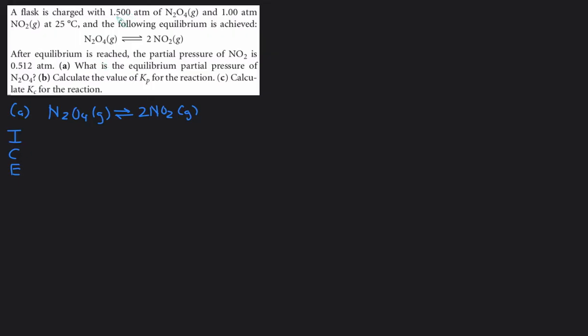This time we're starting with atmospheres. The initial pressure of N2O4 is 1.500 atmosphere. The initial pressure of NO2 is 1.00 atmosphere. It tells us that at equilibrium the pressure of NO2 is 0.512 atm.